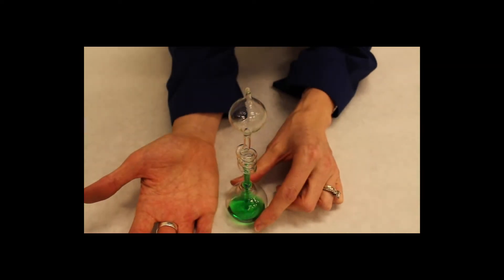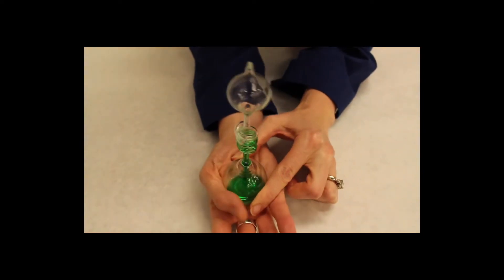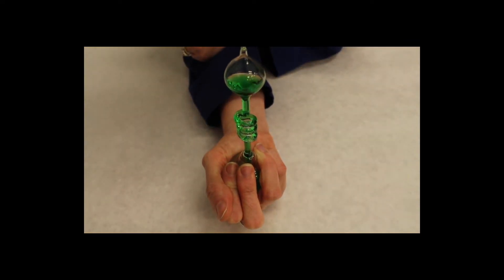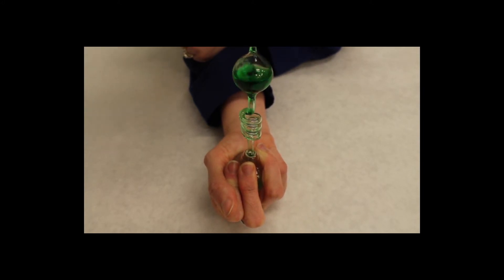So what we're going to do is place the hand boiler in my hand, and the heat from my hand is going to cause the temperature of the gas to increase. This causes the pressure of the gas to also increase, which forces the liquid up into the upper bulb.